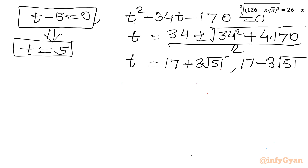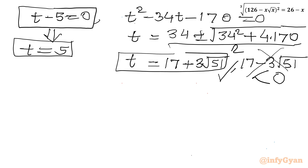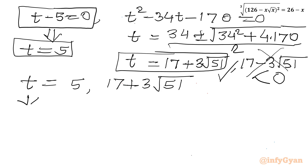Checking the solution 17 - 3√51: since 3√51 is greater than 17, this value is negative. Since t = √(xy) must be positive, this solution is rejected. So the accepted values of t are t = 5 and t = 17 + 3√51.